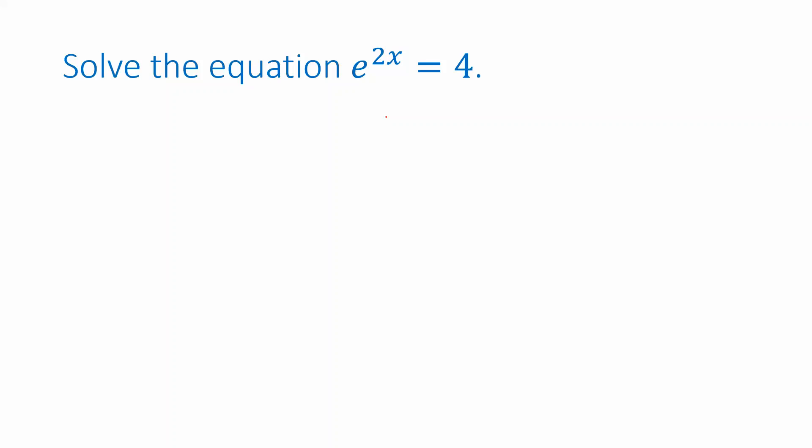As usual we want to try to isolate the unknown x. If you think about what happens when you plug a number in for x, the first thing you do after you plug it in is multiply it by 2, and then that becomes the power of the exponential function here. So the term for that is exponentiating. We are exponentiating e to 2x. So how do we undo exponentiation? What's the opposite operation?